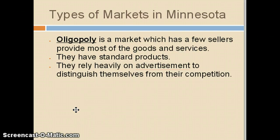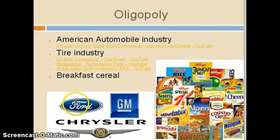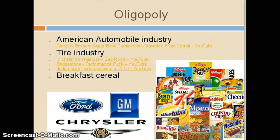Another type of market that exists in a free enterprise system is oligopoly. In this type of market structure, there are very few sellers that provide most of the goods and services. Their products are fairly standard, and these corporations rely very heavily on advertising to distinguish themselves from other competitors. Examples of oligopoly include the automobile industry and the tire industry.